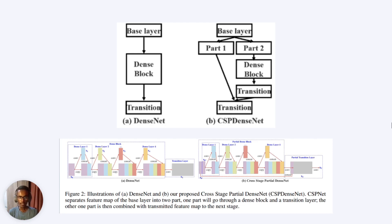In CSPNet, the input feature map is partitioned into two parts. The first part is transferred directly to the transition layer. On the second partition, the same type of operation as in DenseNet is performed — a bunch of convolutions are performed and concatenated together — while the second partition of the input feature map directly moves to the transition layer and is concatenated.